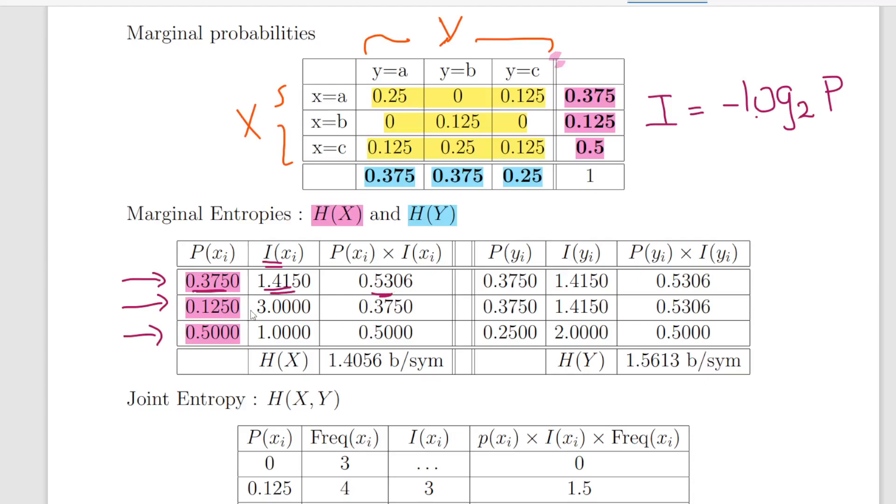Likewise here, 0.1250 times 3 gives me 0.3750 and then finally 0.500. So when I add those up that gives us the entropy of X which is this number here. That is essentially just add up the values of this column here and I should get 1.4056 bits per symbol. Now so this is the entropy of X over on one side.